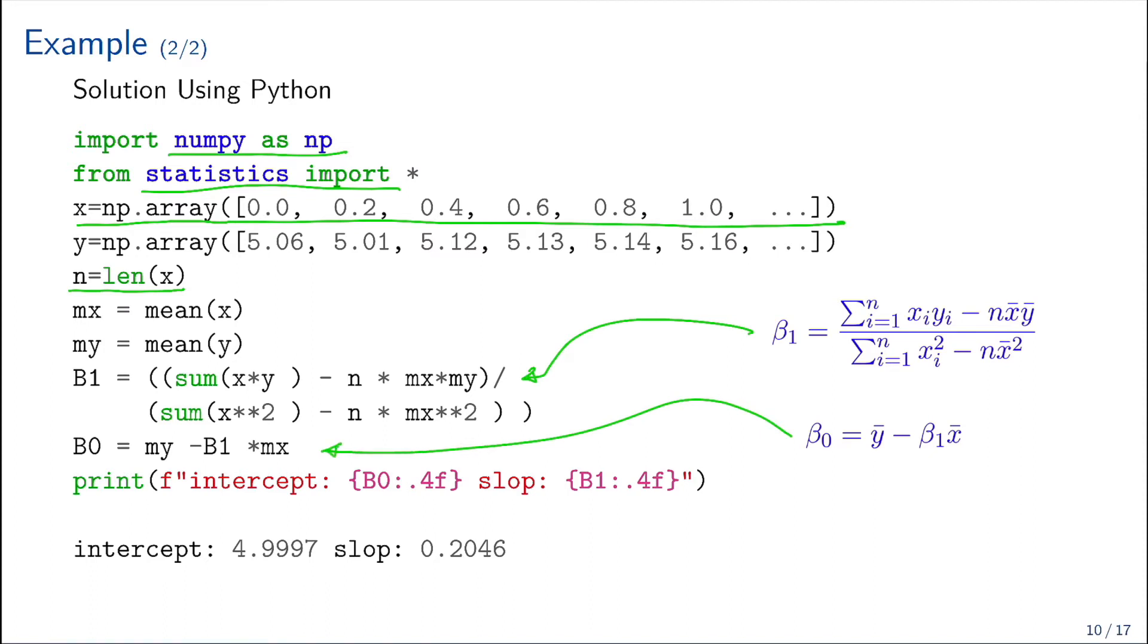And then voila, we have the intercept beta0 and the slope beta1. When we print them, we have that beta0, the intercept, is 4.9997, almost 5, and the slope is 0.2046.